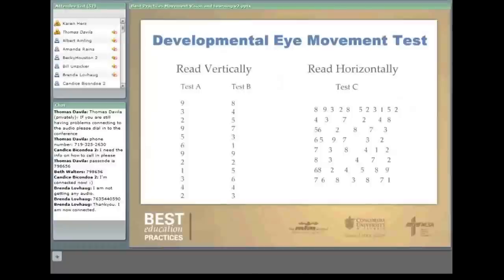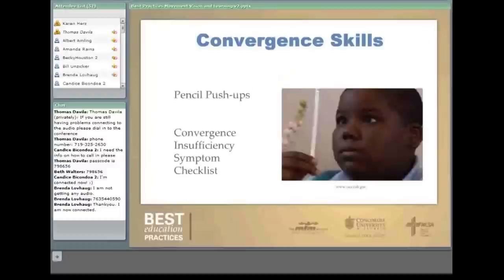In test C, students read a total of 80 numbers — the same as the vertical, only horizontally — and the time is recorded. If there is a huge discrepancy between how fast they can read vertically versus horizontally, then eye movement issues are suspected. This is a normed test; the cost is about $88 and is available from Brunel.